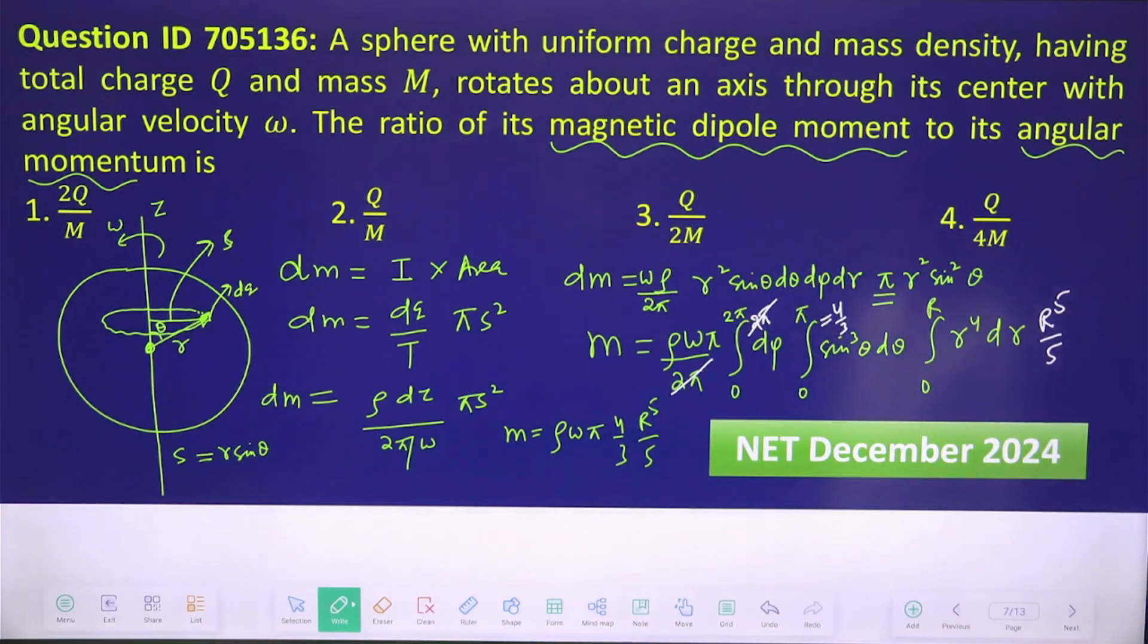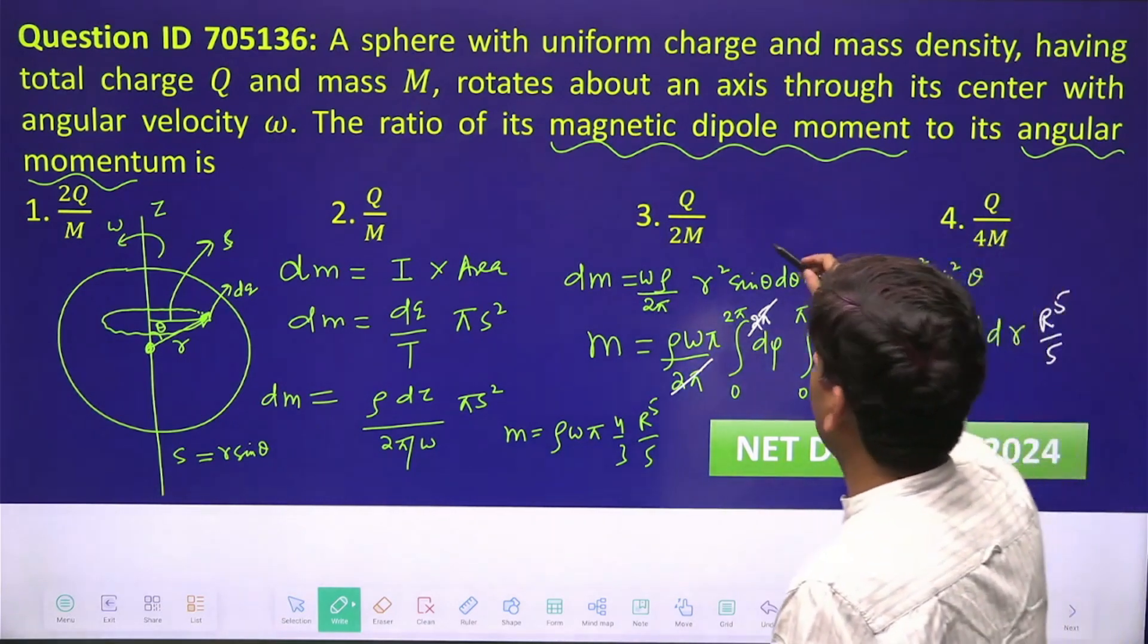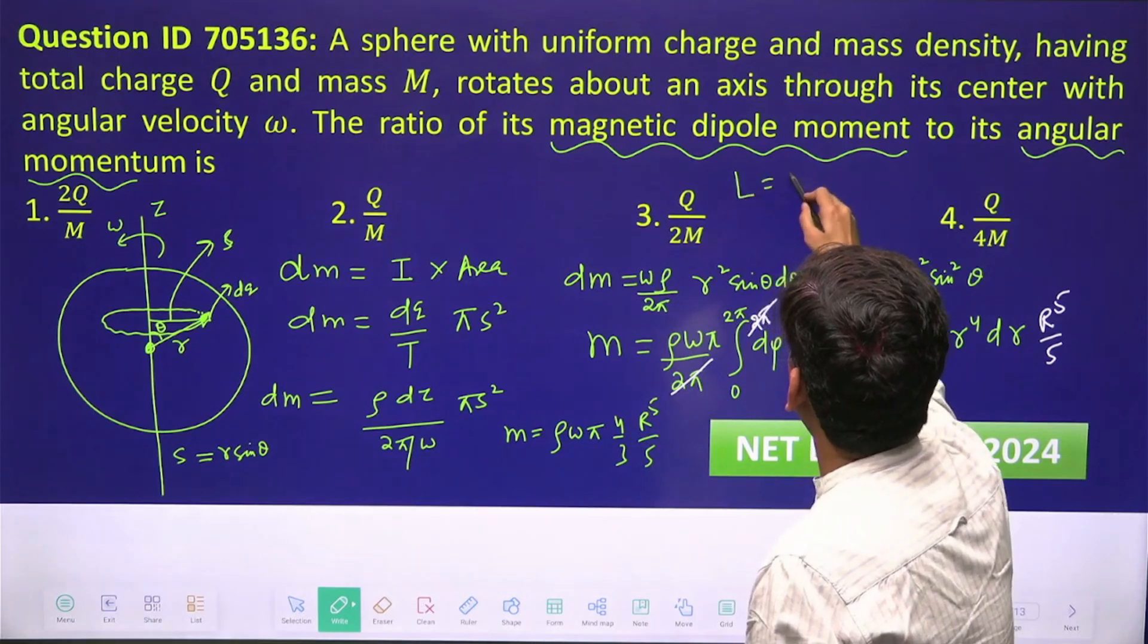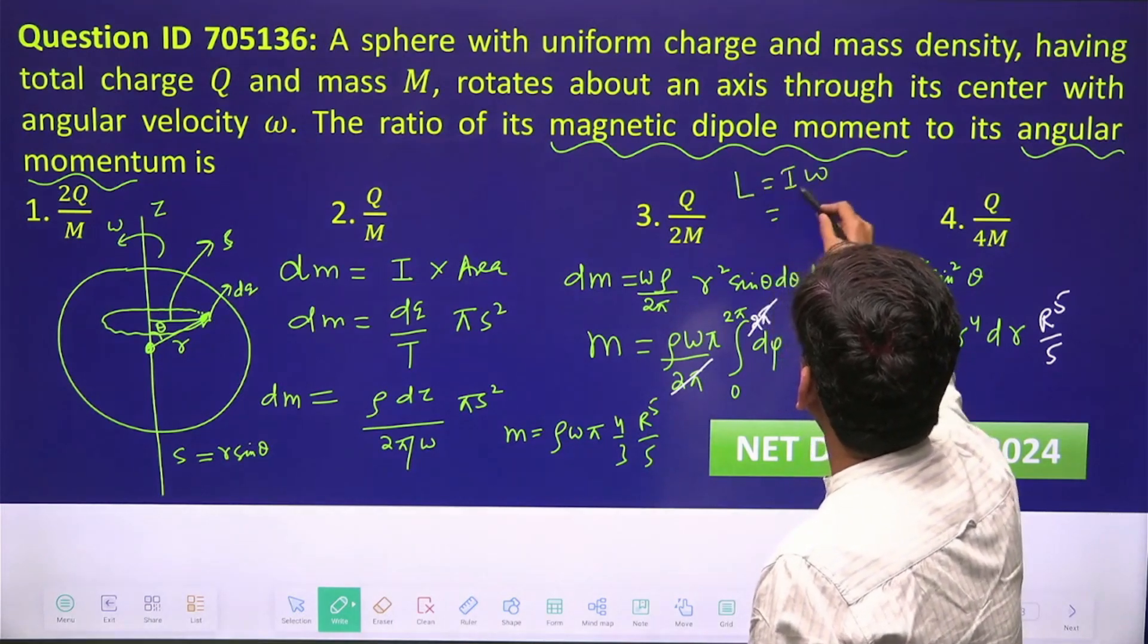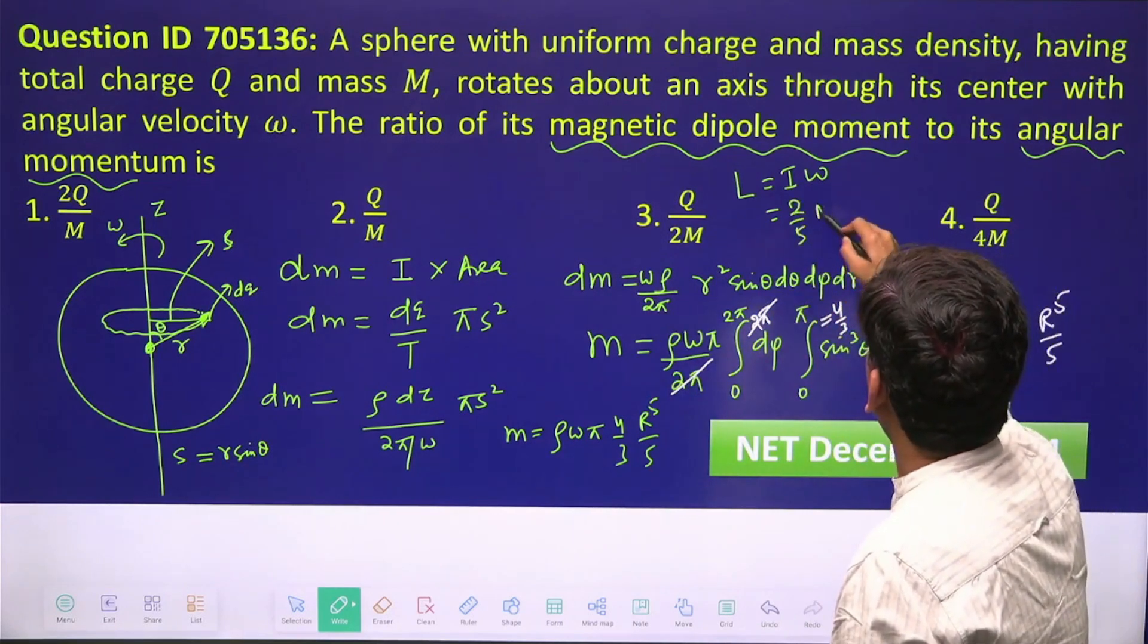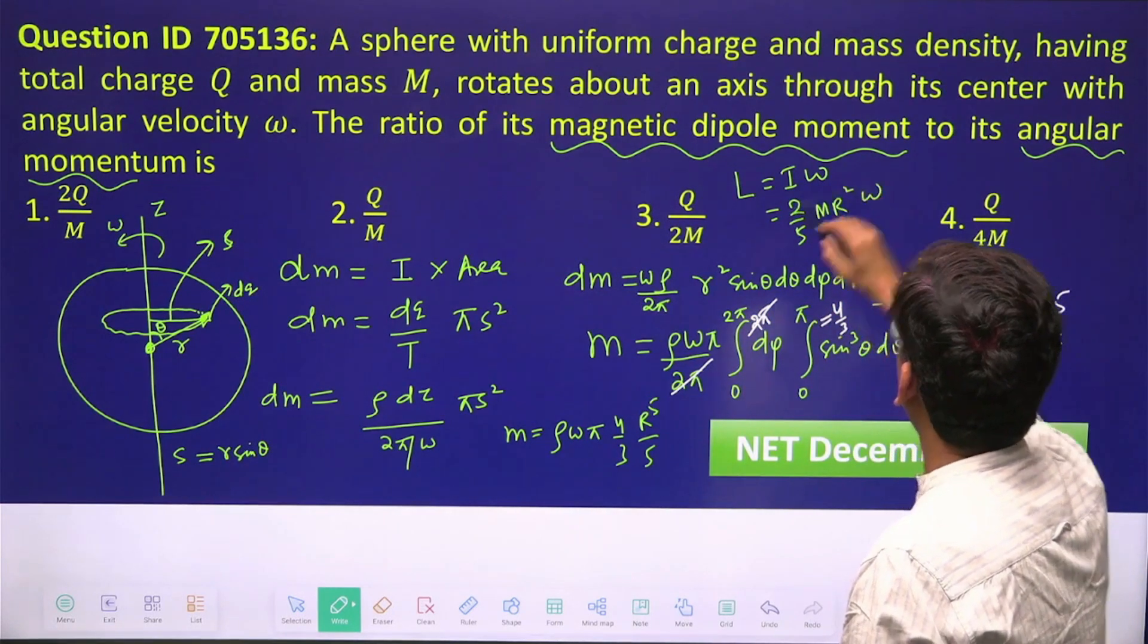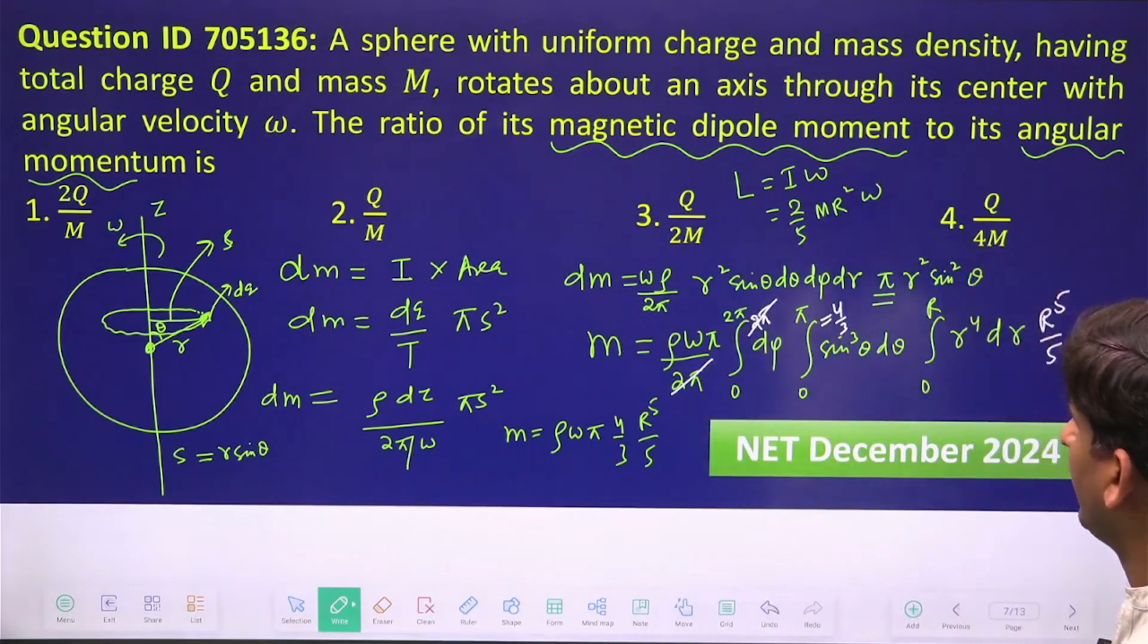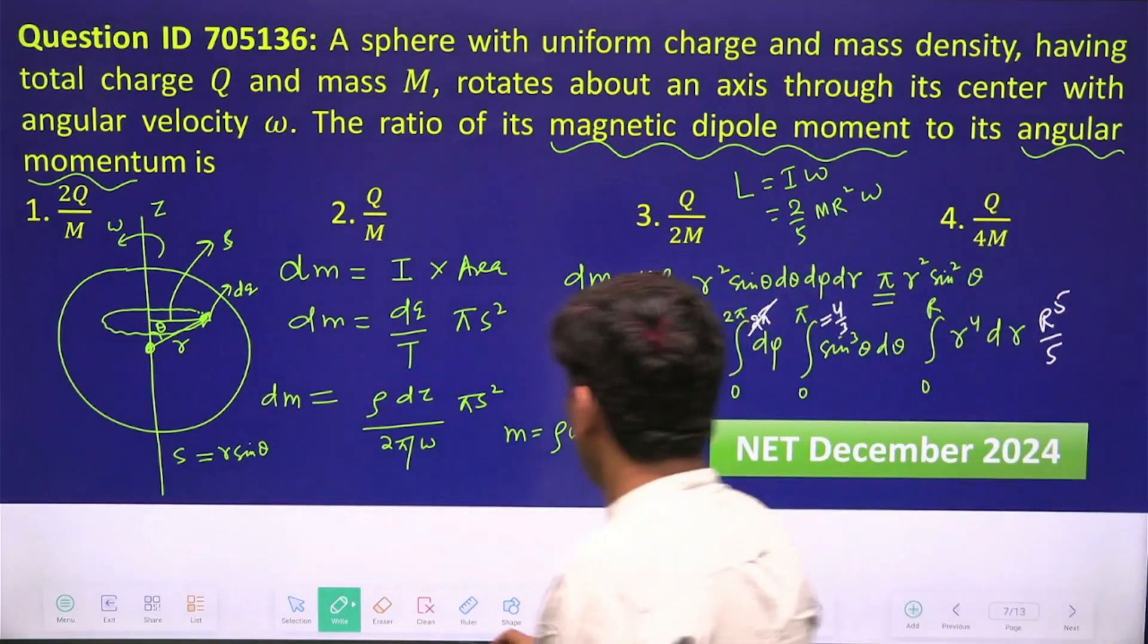Now this is the value of magnetic moment. What will be the angular momentum L? L is equal to I ω. What is the moment of inertia of a solid sphere? 2/5 m r² into ω.